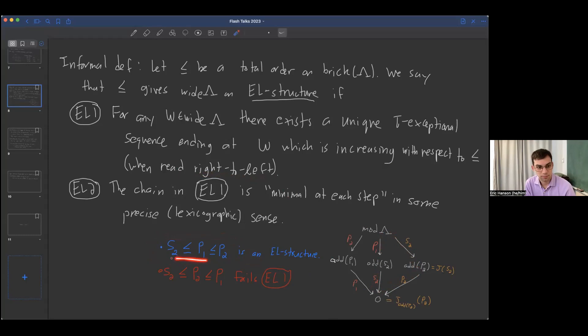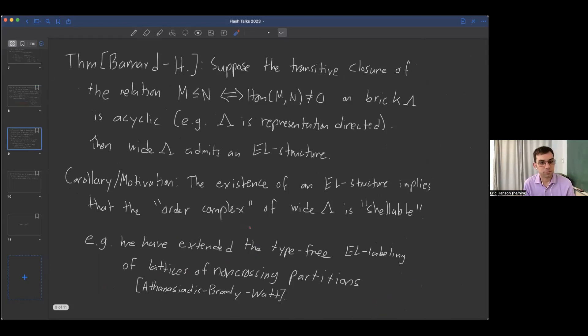P1, S2 is not increasing, and P2, P1 is also not increasing. Here we do have that unique tau exceptional sequence ending at the bottom that's increasing. The second property is that this chain has to be minimal at each step in some precise sense related to the lexicographic order. For example, where S2, P2 is our increasing chain, it's saying that S2 really had to be the smallest thing in our partial order. Otherwise, that couldn't have been our increasing chain. It's a technical condition. You might say, why should we care about such a thing? I'll tell you the theorem, and then some motivation for why we would study such things.